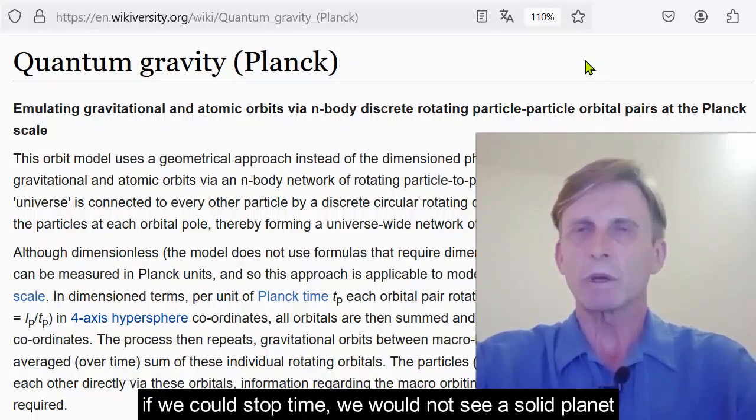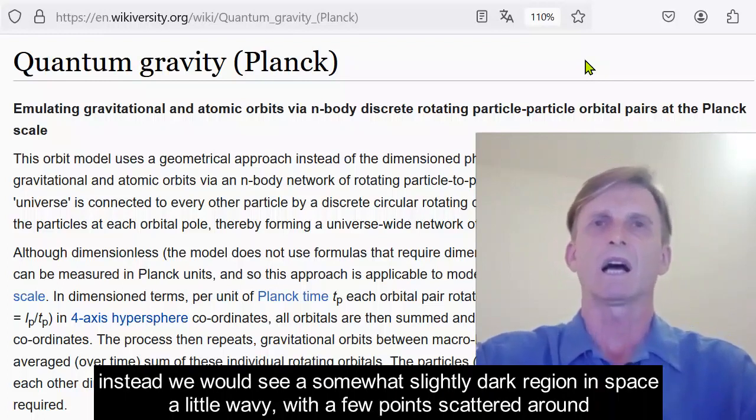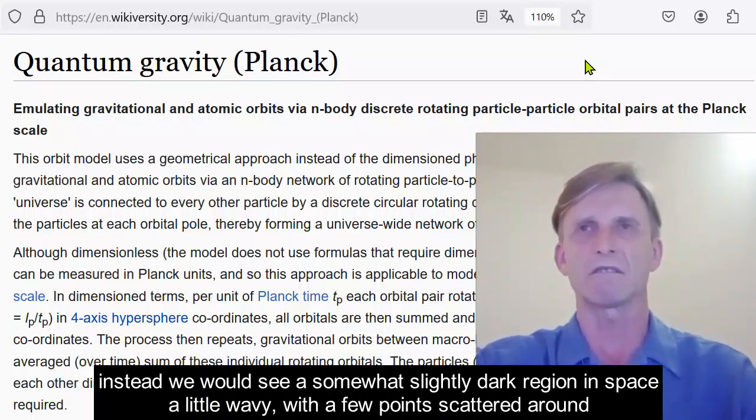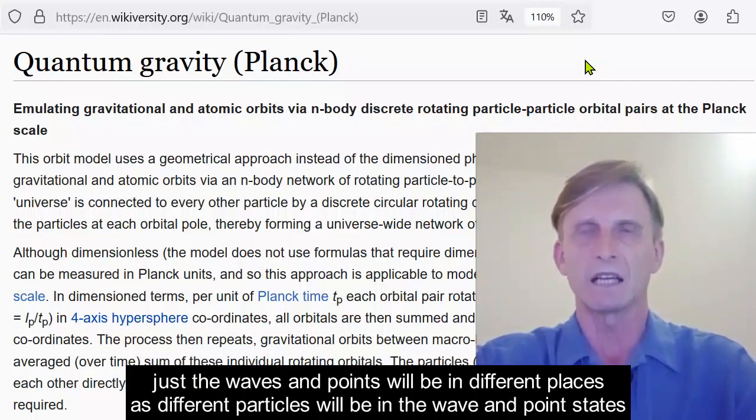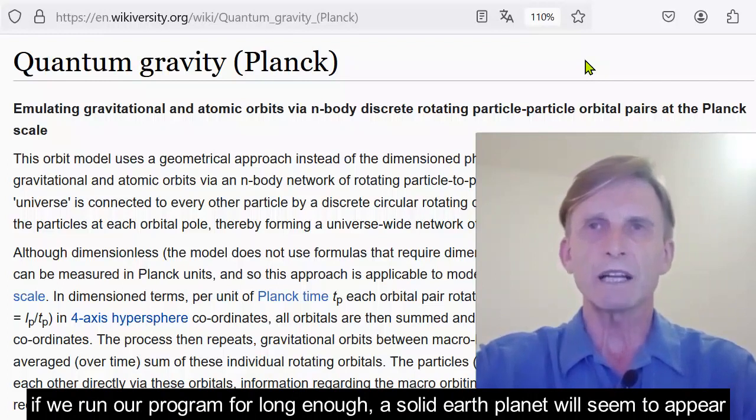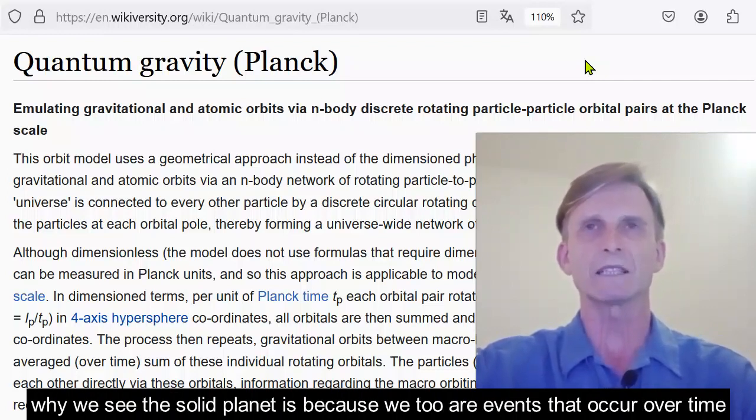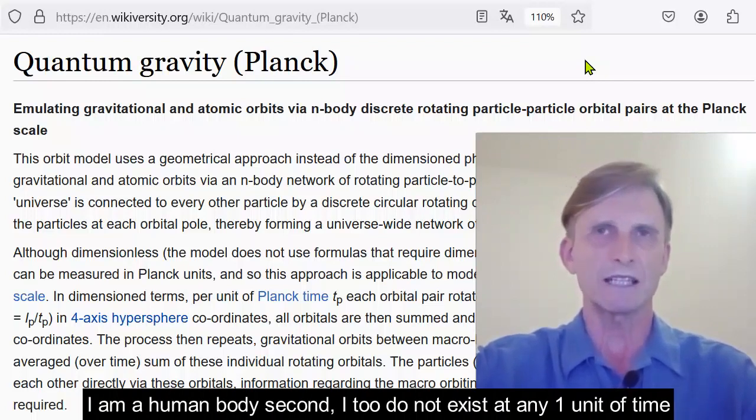If we could stop time, we would not see a solid planet. Instead, we would see a somewhat slightly dark region of space, a little wavy with a few points scattered around. If we press play and then pause, we will see the same effect. Just the waves and the points will now be in different places, as different particles will be in the wave and point states. If we run our program for long enough, a solid Earth planet will seem to appear. Why we see this solid planet is because we too are events that occur over time. I am a human body second. I too do not exist at any one unit of time.